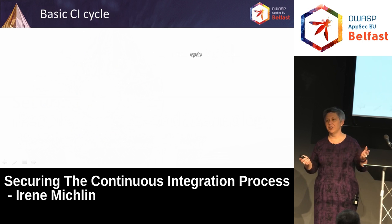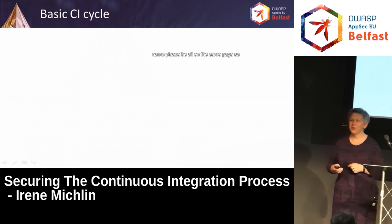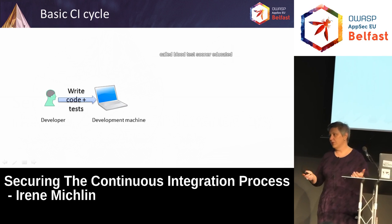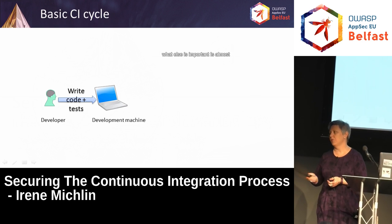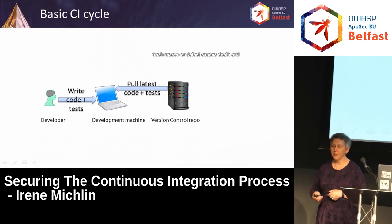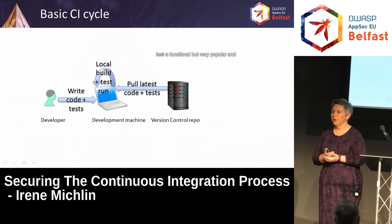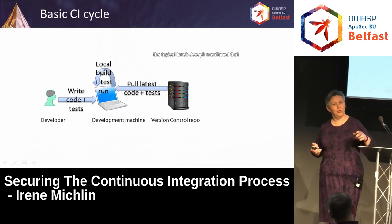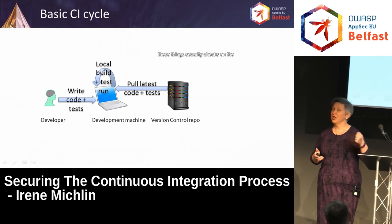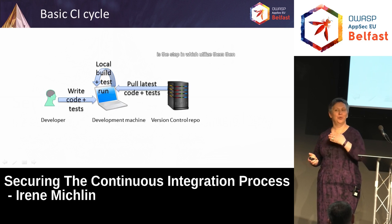So, basic continuous integration cycle — I know everyone knows, but when I talk about components and call some specific names, at least we're all on the same page. We have a developer who writes code plus tests on a dedicated development machine. Tests are important — it's almost impossible to have continuous integration if you don't protect your freshly written or modified code with tests. Then tools pull the latest from version control. Running a local build and test is optional but very popular. There are now tools that let you do security checks on the developer machine even before it's committed.